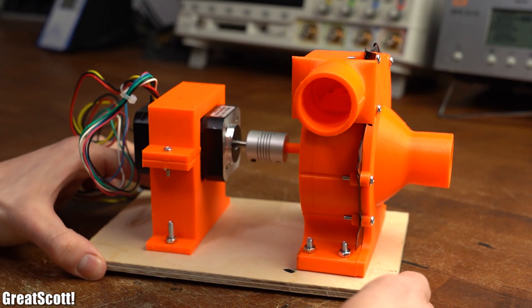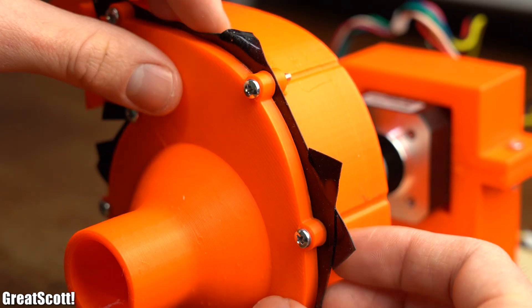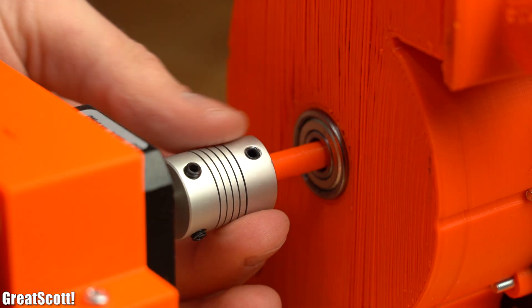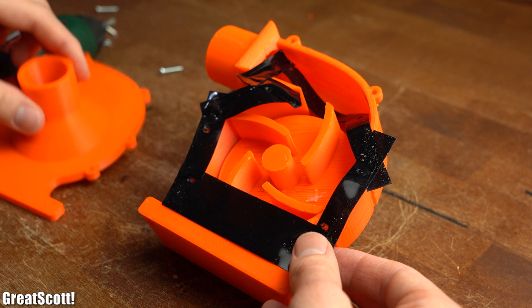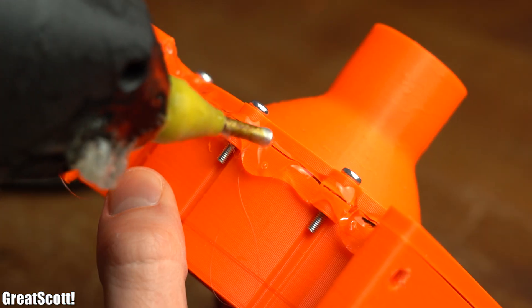And just like that, the mechanical construction should have been complete. But at this point I noticed that the silicone tape inside the pump hinders the movement of the wheel. So I was more or less forced to remove most of it and instead create a watertight seal with good old hot glue.